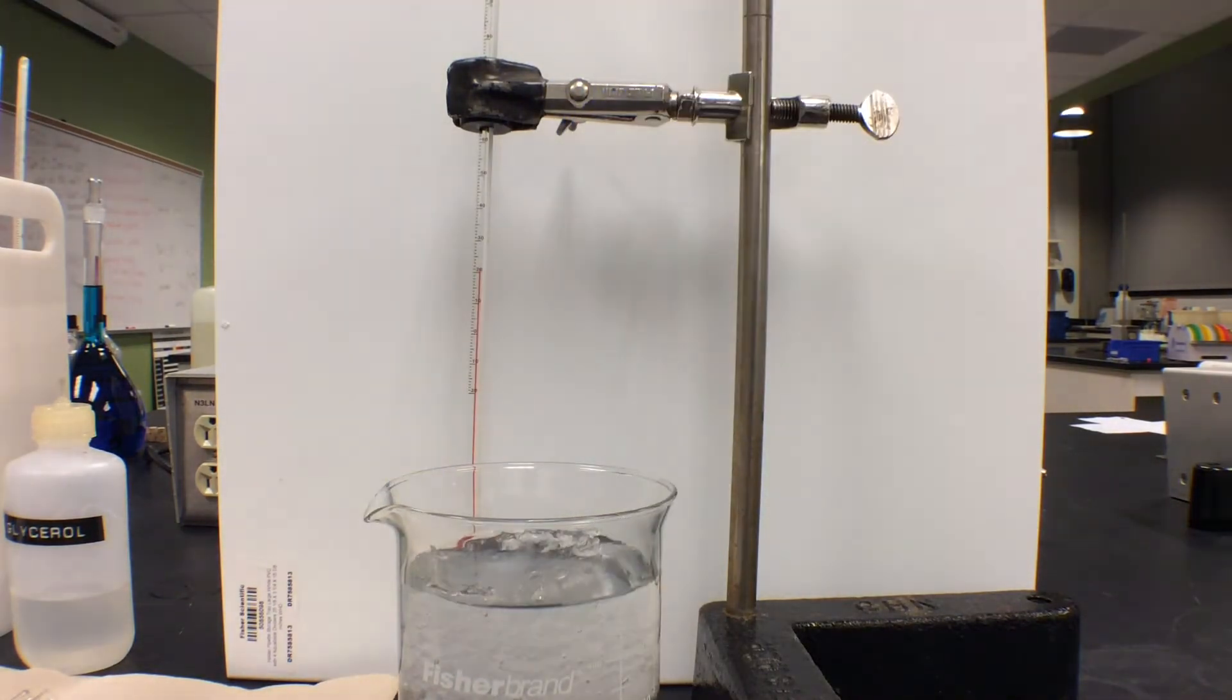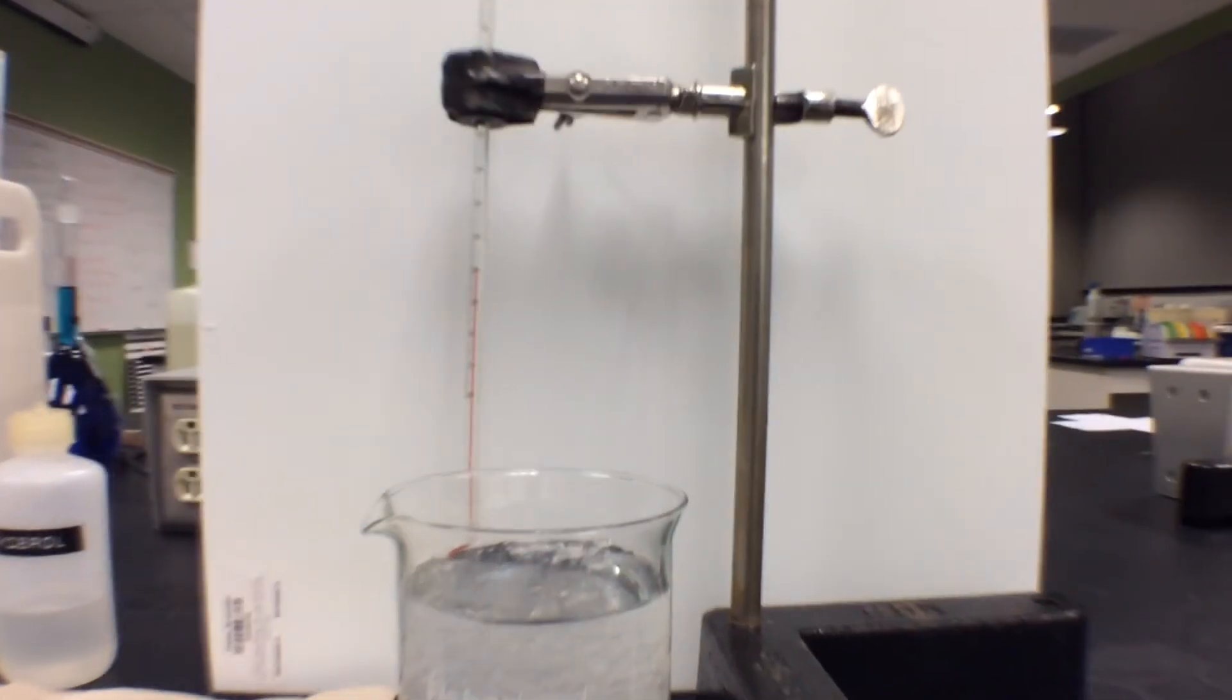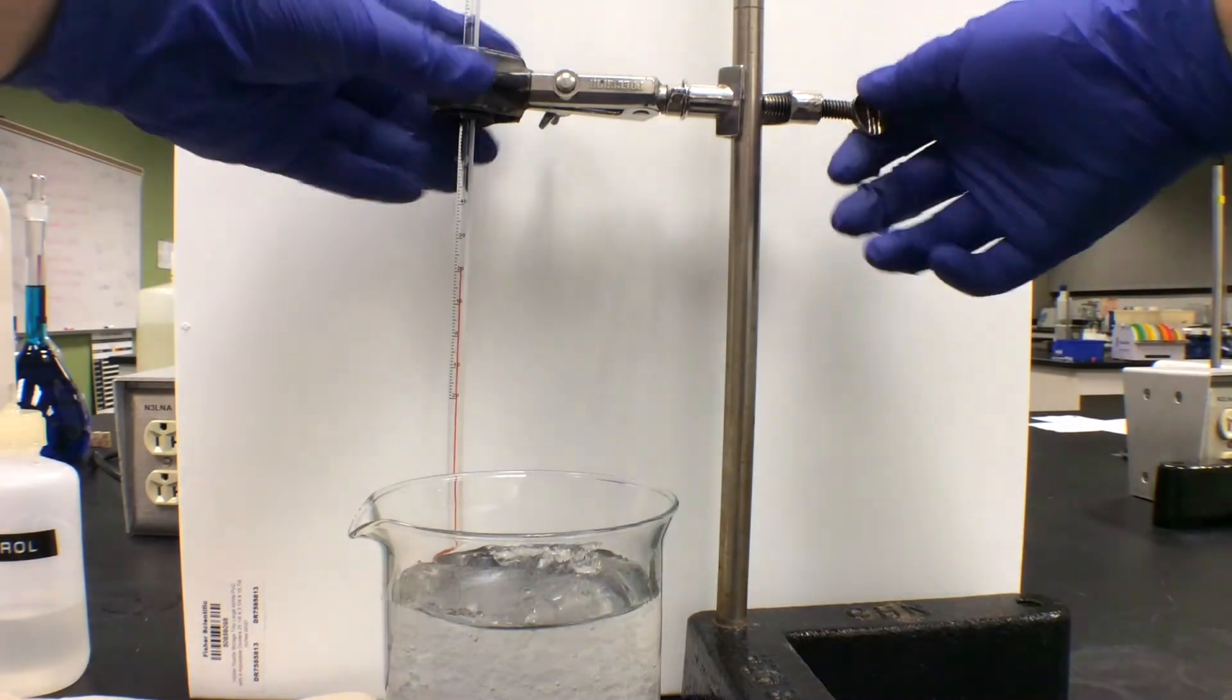Next, calibrate the thermometer with an ice bath. An ice bath is made with ice and deionized water in a large beaker.